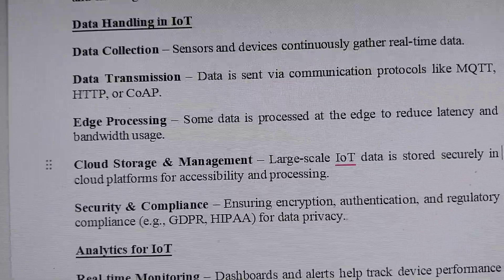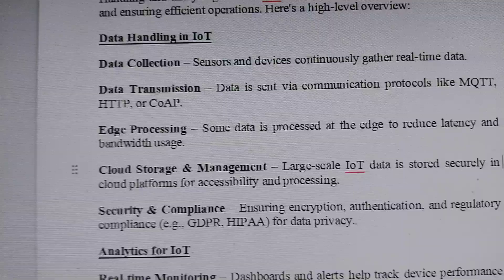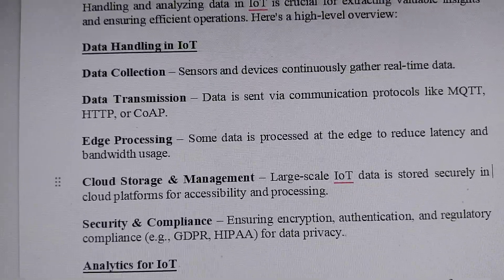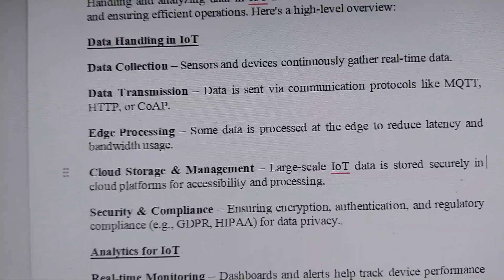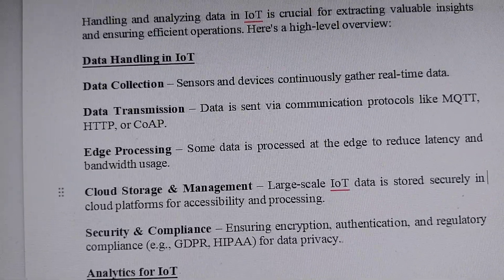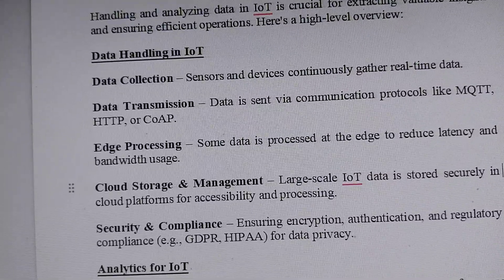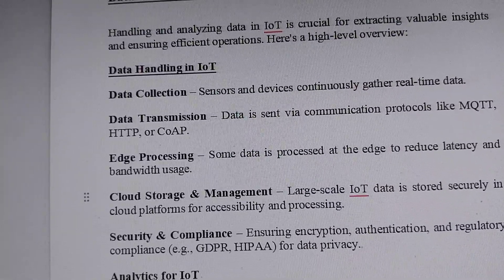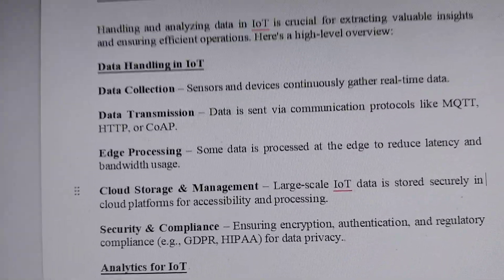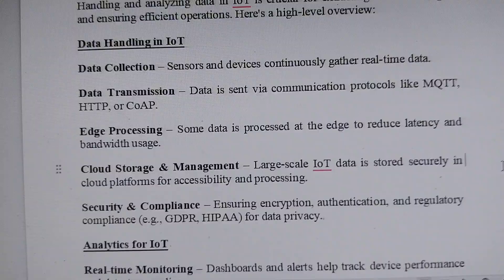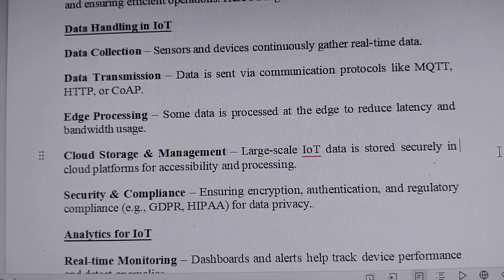The next protocol is CoAP — Constrained Application Protocol. It is also a lightweight protocol designed for IoT devices, similar to HTTP but optimized for IoT devices. CoAP uses UDP instead of TCP, thereby reducing overhead. These are the five different stages for data handling: data collection, data processing, data storage, data security, and data transmission.